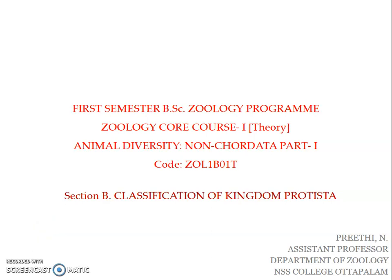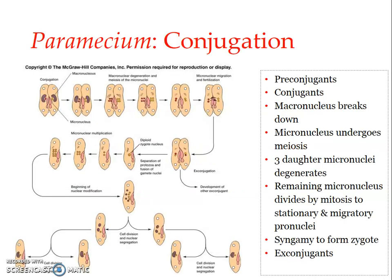Welcome back. This presentation is about conjugation in paramecium. It is a mode of reproduction where there is a nuclear reorganization and exchange of nuclear chromosomal or genetic material. We will see in detail the process of conjugation taken up by paramecium, which undergoes a sexual phenomenon referred to as conjugation.